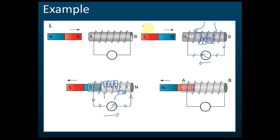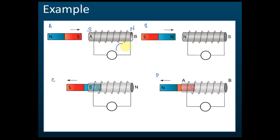Let's say this is A, this is B, this is C, and this is D. We have done B and C. Now A and D switch the directions of the deflection for the galvanometer. A and C, and B and D deflect to the left.